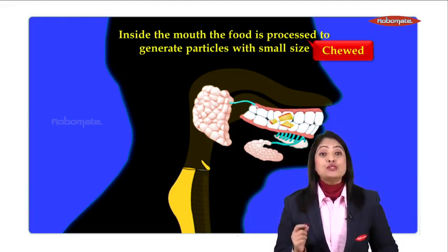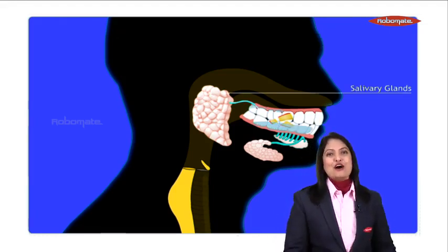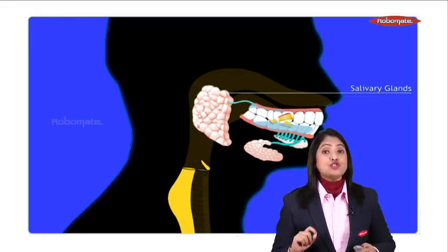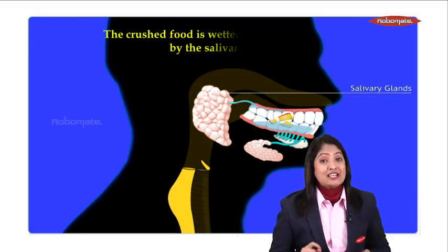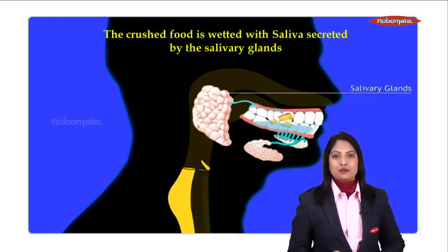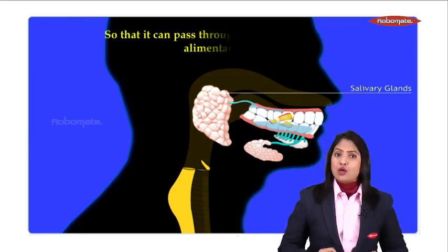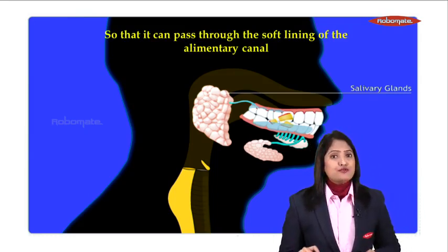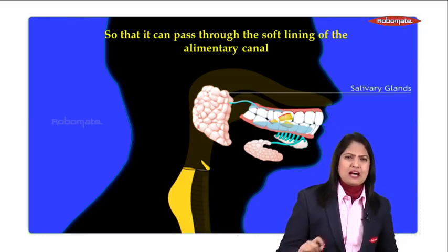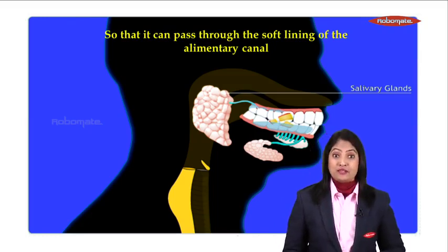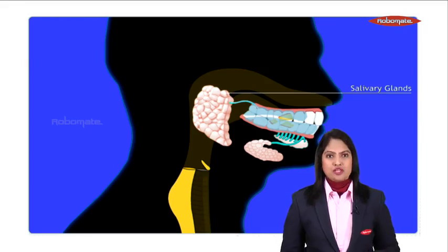Furthermore, when the teeth are chewing the food, the salivary glands are stimulated and they secrete saliva into the mouth. The crushed food is wetted with saliva. Now, what happens because of this? The crushed food is converted into a soft mass that can pass easily through the soft lining of the alimentary canal without damaging it. So let's focus one more time on what all is happening.